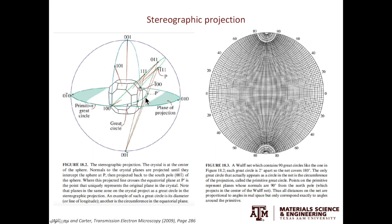On the right, it's something called Wolf net. What it does is it will help us to quantify the angles between each plane.